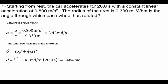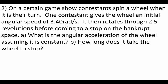Let's hit up another problem. So on a certain unnamed game show, contestants spin a wheel when it's their turn. One contestant gives the wheel an initial angular speed. So we have an angular unit. We have omega of 3.4 radians per second. It then rotates through 2.5 revolutions. Now that's not an angular unit. That's just a unit telling you how far it's gone. So we're going to need to convert that one before coming to a stop on the bankrupt space. Ah, poor guy. What is the angular acceleration of the wheel, assuming that it's constant? How long does it take the wheel to stop?